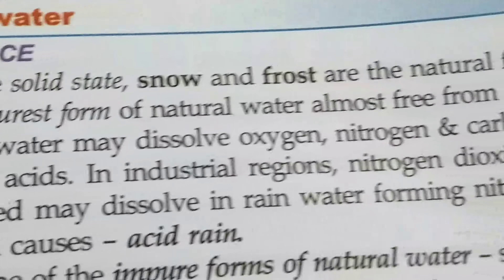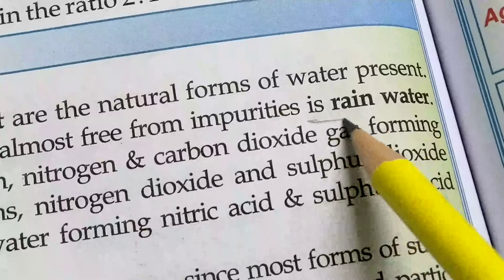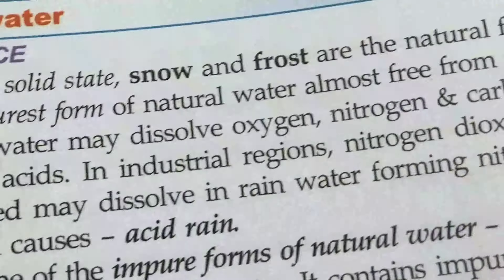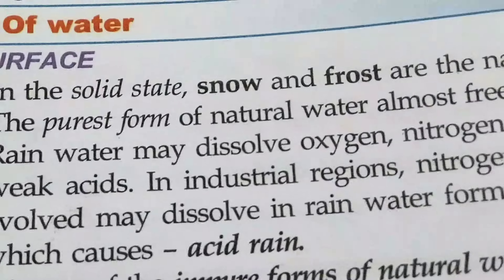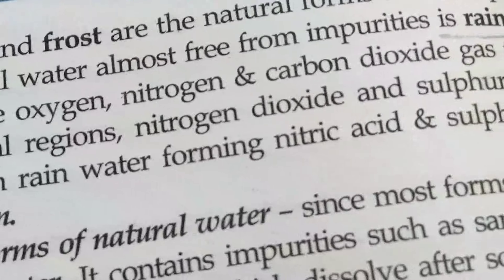The purest form of natural water, almost free from impurities, is rain water. Rain water may dissolve oxygen, nitrogen, and carbon dioxide gas, forming weak acids.